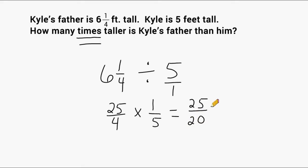Now 25 and 20 both share a common factor of 5, so we can divide the top and the bottom numbers by 5 to reduce this fraction. And 25 divided by 5 is 5, and 20 divided by 5 is 4.